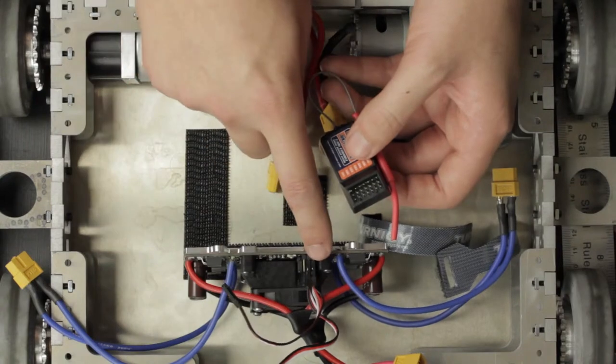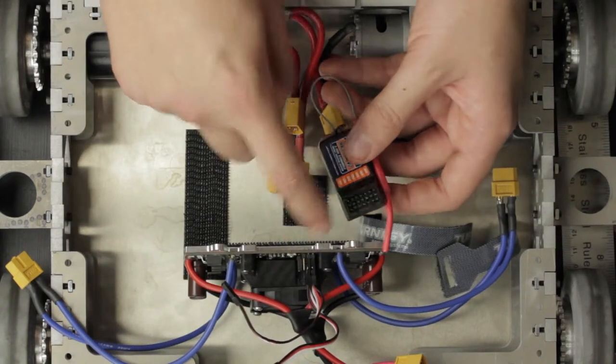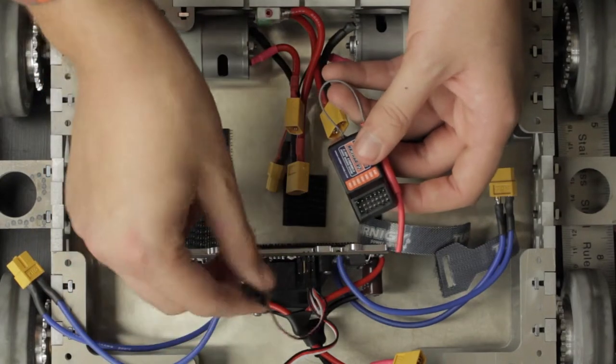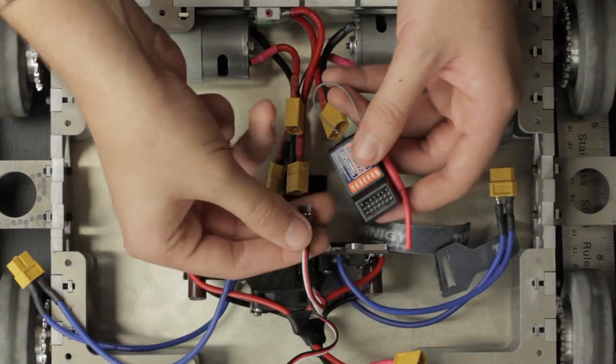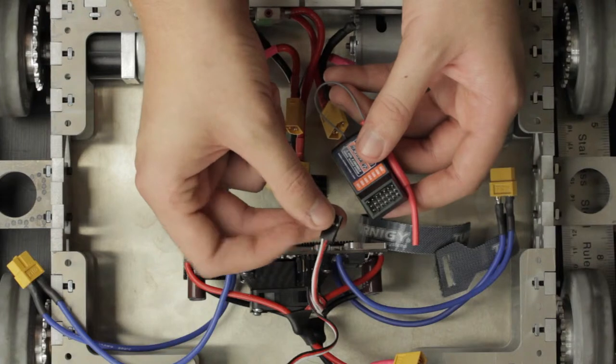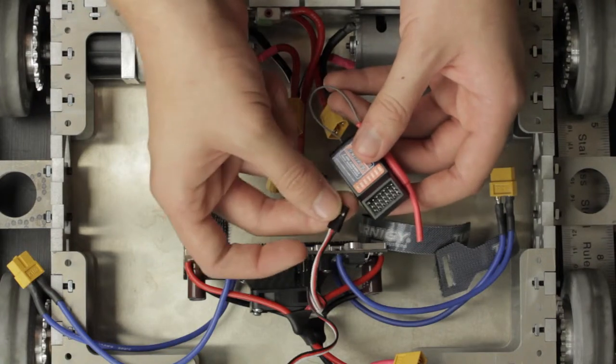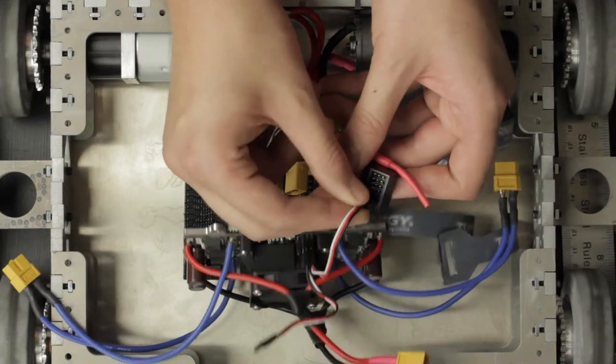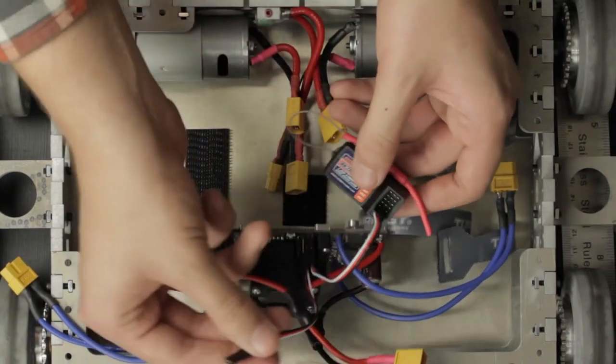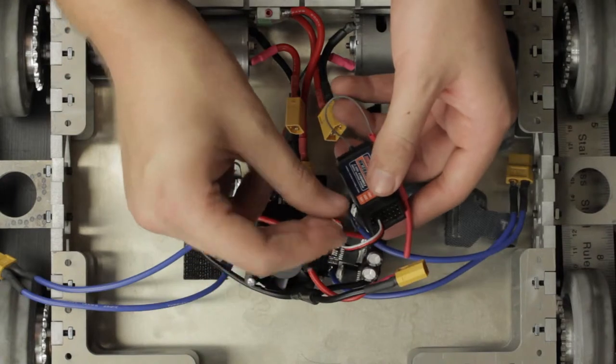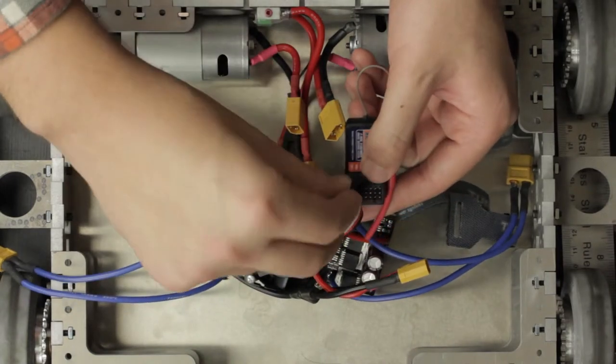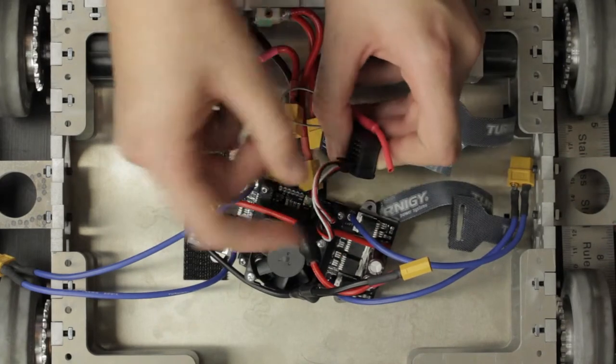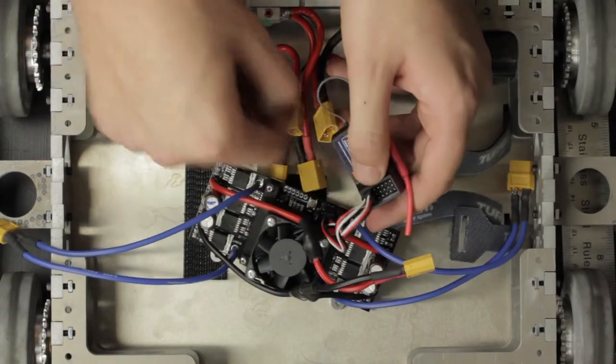So what I tend to do is I go for the second channel to the first channel on this and the first channel on the rage bridge to the second channel on the receiver. So I'm going to take the second channel from the rage bridge and you want the ground or black wire to be to the outside of the receiver and the white signal wire on the inside. I'm going to go ahead and connect this to channel 2. And I'm going to take channel 1 from the rage bridge and go ahead and connect this to channel 1, making sure that I have the grounds on the outside and the signal wires on the inside.